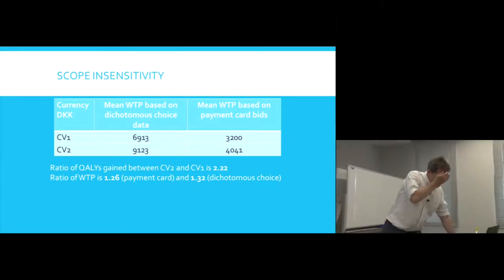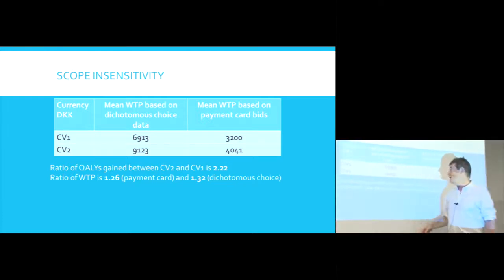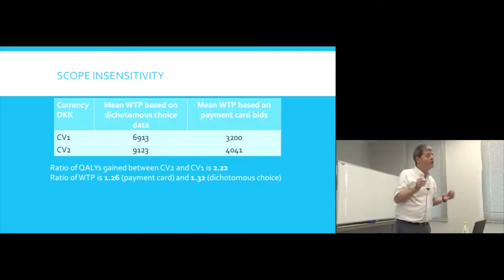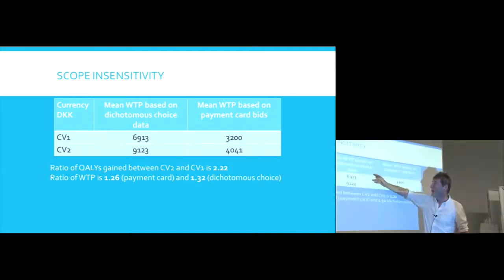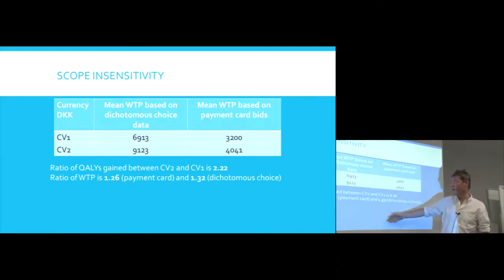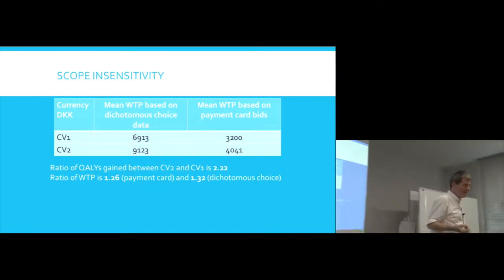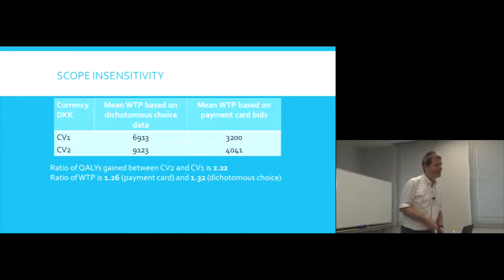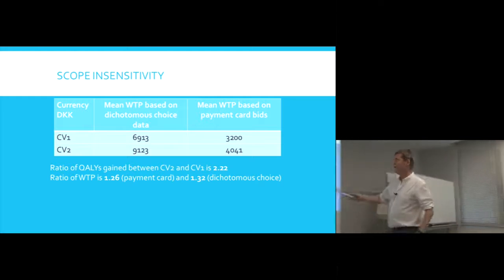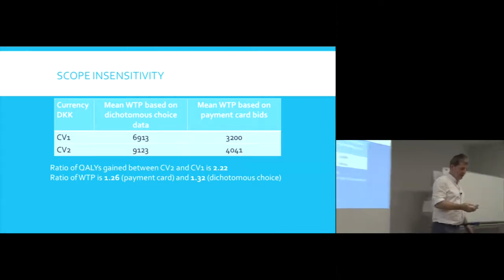Now, the ratio of QALYs that are being gained between the two programs was calculated as about 2.22. In other words, this second program was saving or generating, depends how you want to look at it, about twice as much, slightly more than twice as many QALYs. But if we look at the ratio of these willingness to pay, they're not 2.22. On the payment cards, it was 1.26. On the dichotomous choice, it was 1.32. So there's a degree of insensitivity there. We would rather hope, perhaps if our methods were robust, that these values in the bottom line would be at least twice as much as the top line, and they're not. But it's worse than that.